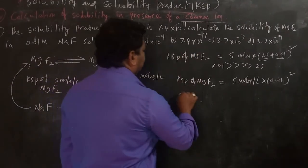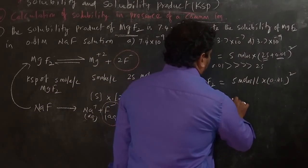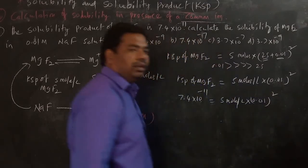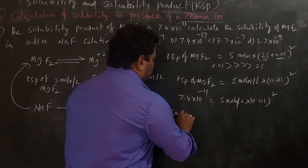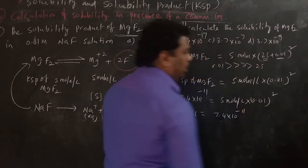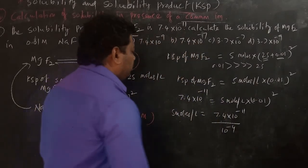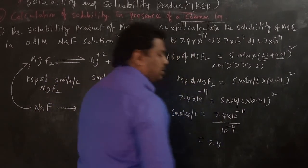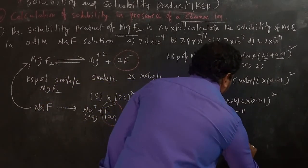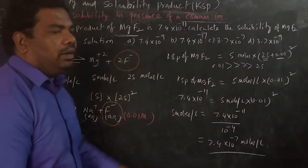We know Ksp of MgF₂ = 7.4 × 10⁻¹¹. So, 7.4 × 10⁻¹¹ = S × (0.01)² = S × 10⁻⁴. Therefore, S = 7.4 × 10⁻¹¹ / 10⁻⁴ = 7.4 × 10⁻⁷ moles per liter. This is the solubility of magnesium fluoride in 0.01 molar sodium fluoride solution.